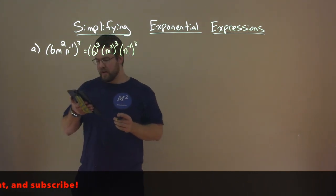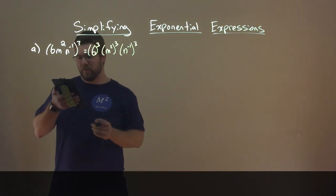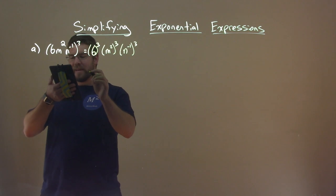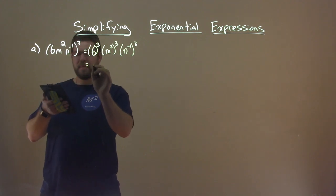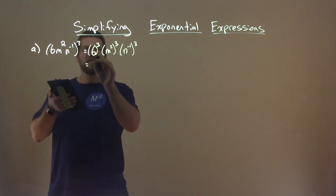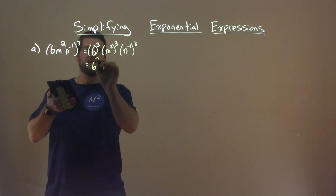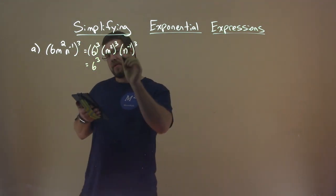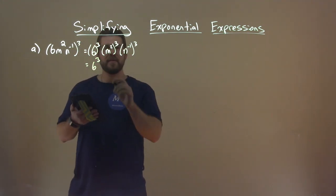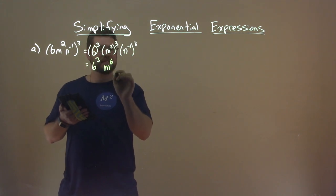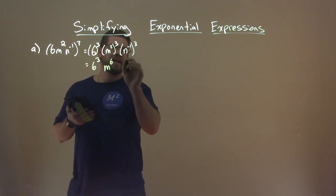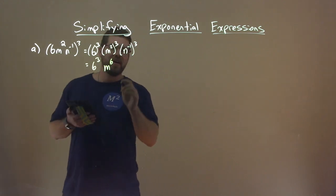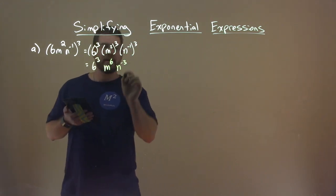From there, we're going to use the power rule, and multiply some of these things out. So 6 to the third is just 6 to the third. m to the 2 to the third power — multiply 2 times 3, which is 6. And n to the negative 1, we take negative 1 times 3, and we have n to the negative 3.